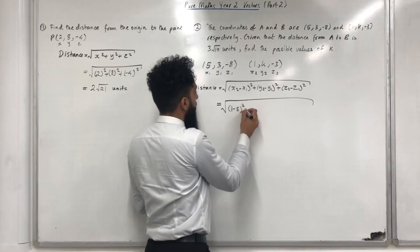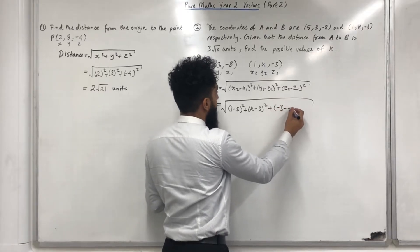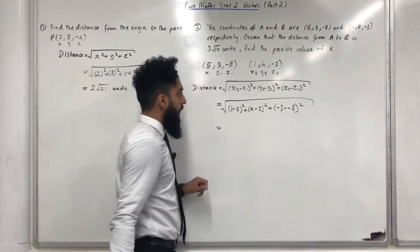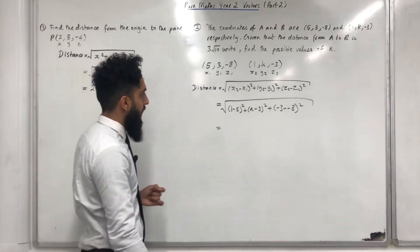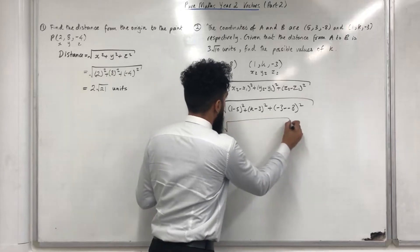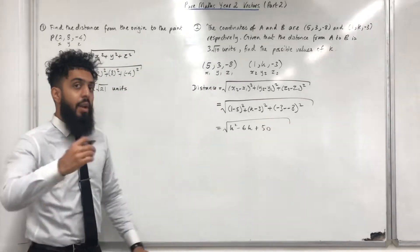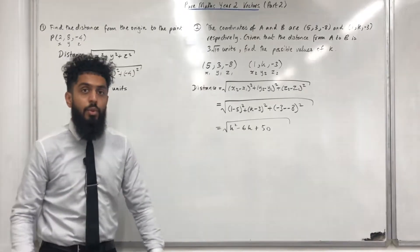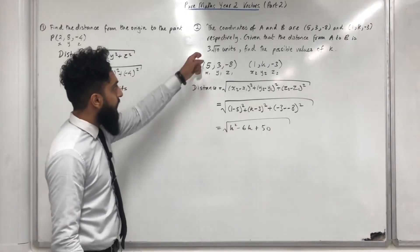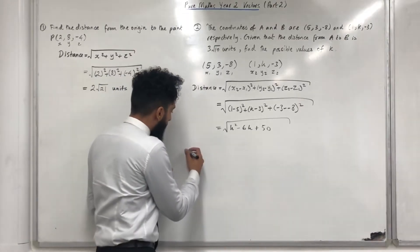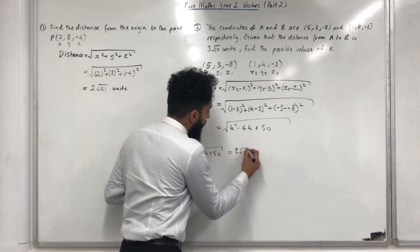Substituting gives us (1 minus 5) squared plus (k minus 3) squared plus (minus 3 minus minus 8) squared. Expanding and simplifying inside the square root, I end up with the quadratic k squared minus 6k plus 15, and cleaning up all terms gives k squared minus 6k plus 50 inside the square root. Since the distance is 3 square root 10, I set: square root of (k squared minus 6k plus 50) equals 3 square root 10.